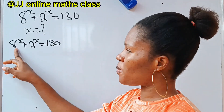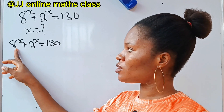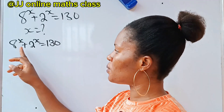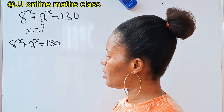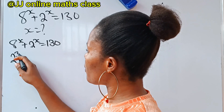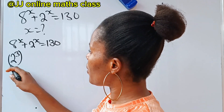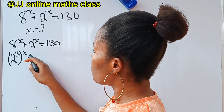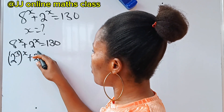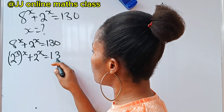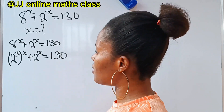We can express 8 as 2 to the power of 3. Let's put them in the same base. So we have 2 to the power of 3, raised to the power of x, plus 2 to the power of x, is equal to 130.